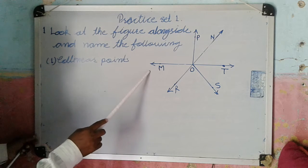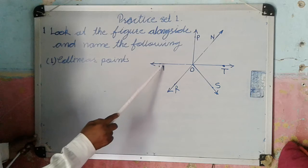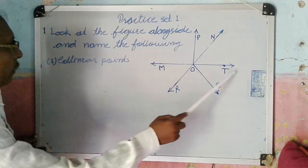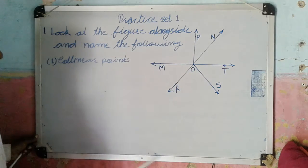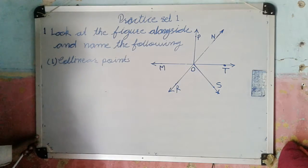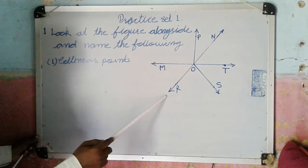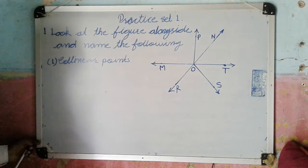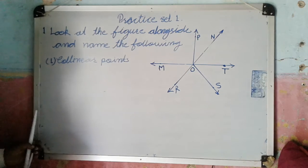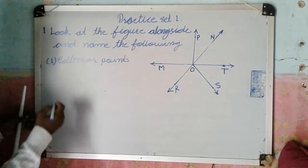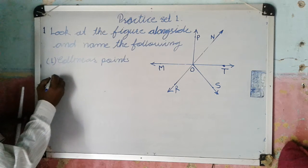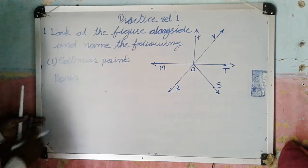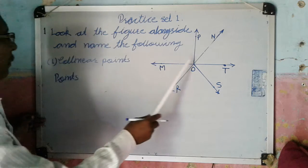So here in this figure, point M, O, T are on the same line, so these are collinear points. Now here another line is here, N, R. On this line R, O, N, these points are here, so here are collinear points.